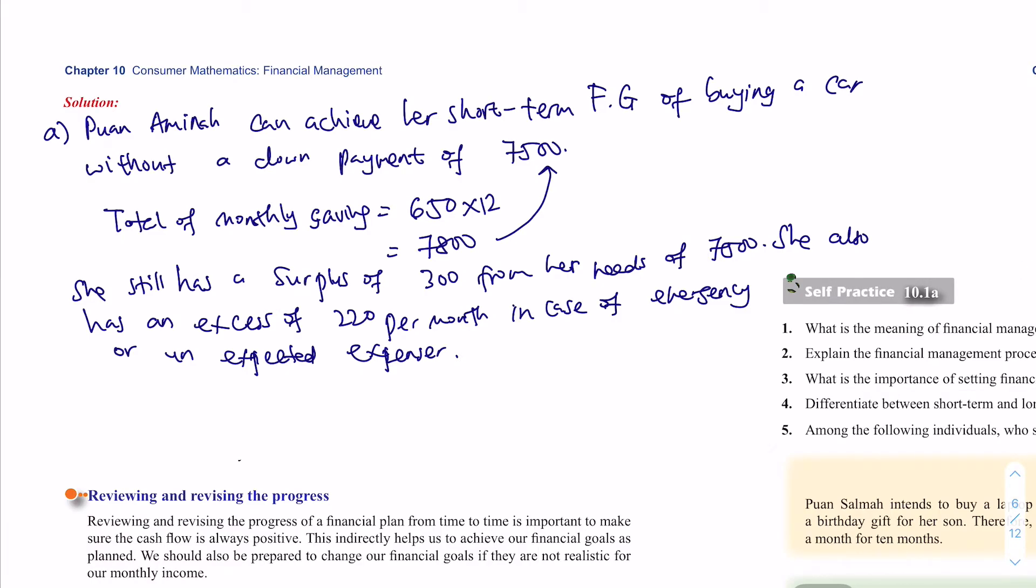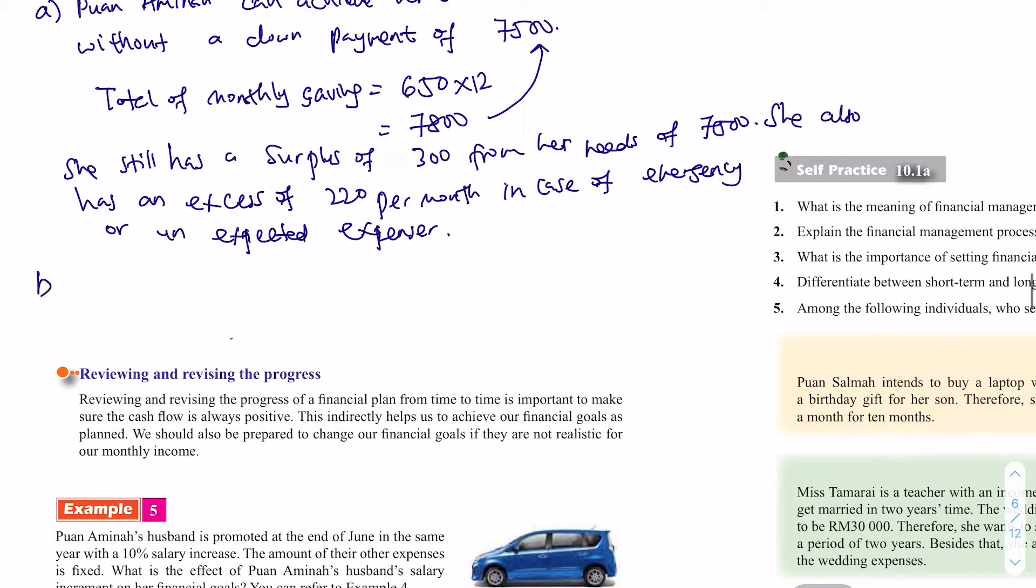Soalan dia tadi: Is Puan Aminah financial management wise? Justify your answer. So, we can say that it is a wise financial management. Because Puan Aminah is spending on basic need. So, boleh tambah lah. She also has monthly saving, priorities protection by buying insurance, and she does not have any debt like credit card debt. Boleh tambah lagi.